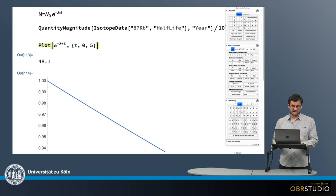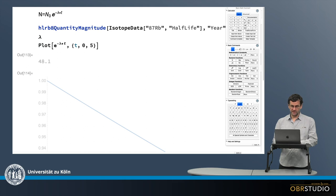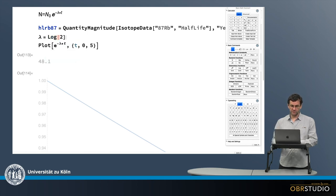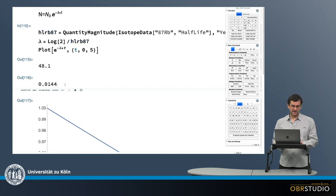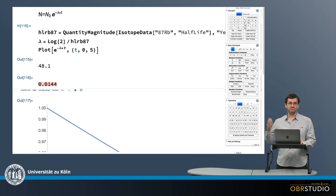But now I don't want a half-life, but the decay constant lambda. So this is the half-life of rubidium-87. And the relationship to the decay constant is that there's the natural logarithm, which is called log here, of 2 divided by the half-life of rubidium-87. And then this is the decay constant in billions of years for rubidium-87.